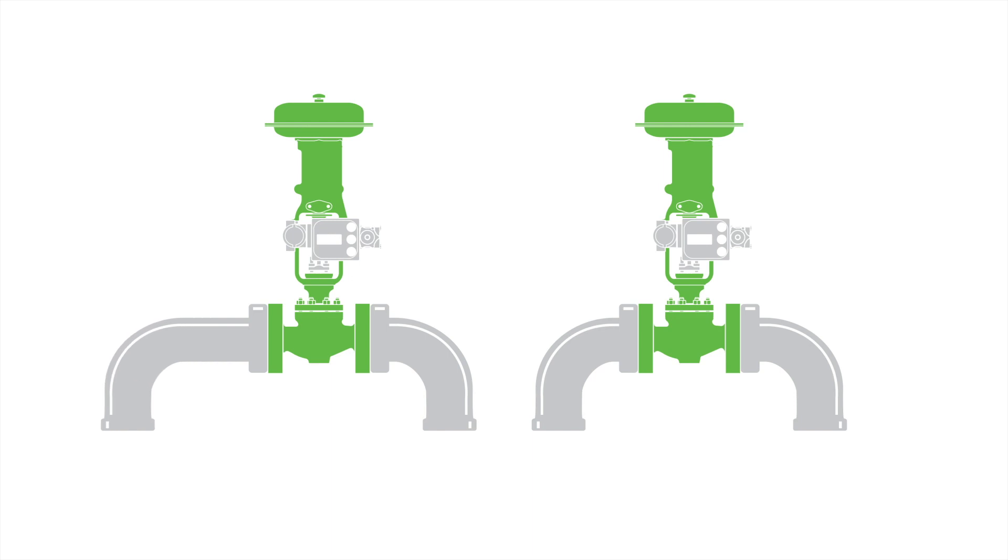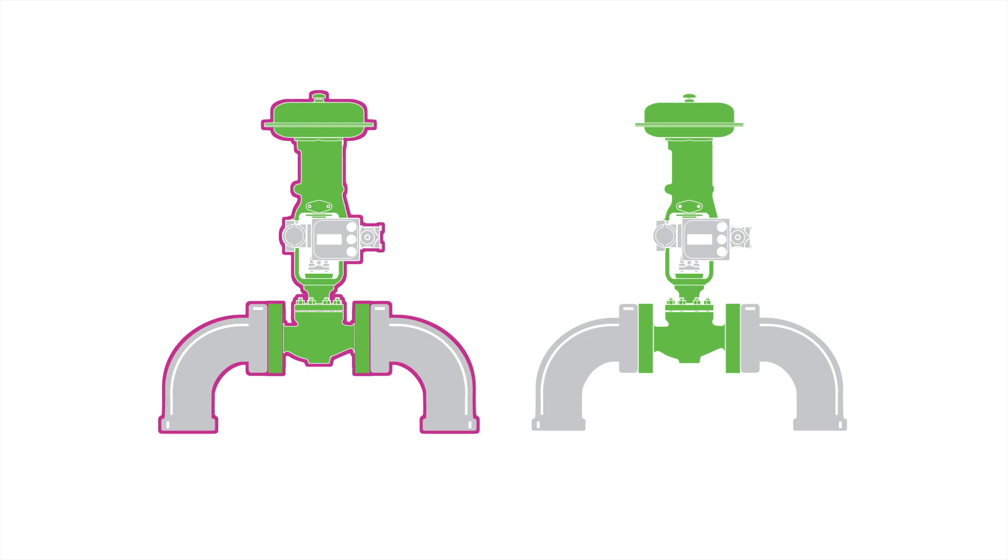Maybe the piping is slightly skewed. Maybe you have fluctuations in temperature and pressure. Even though one valve installation is successful, that success may not be duplicated in an identical train.